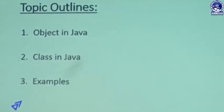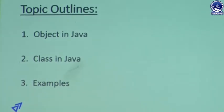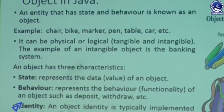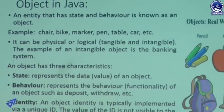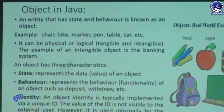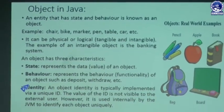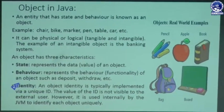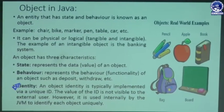Now we can focus on our topic outlines: object in Java, classes in Java, and some examples. First of all, what is the meaning of an object? An object is an entity that has state and behavior — that is known as an object.